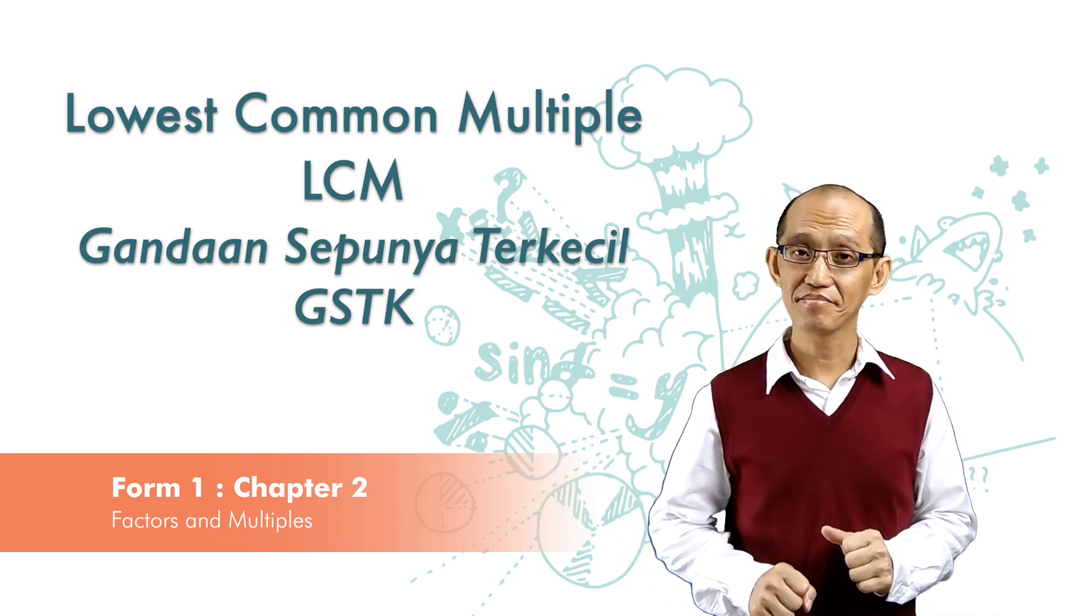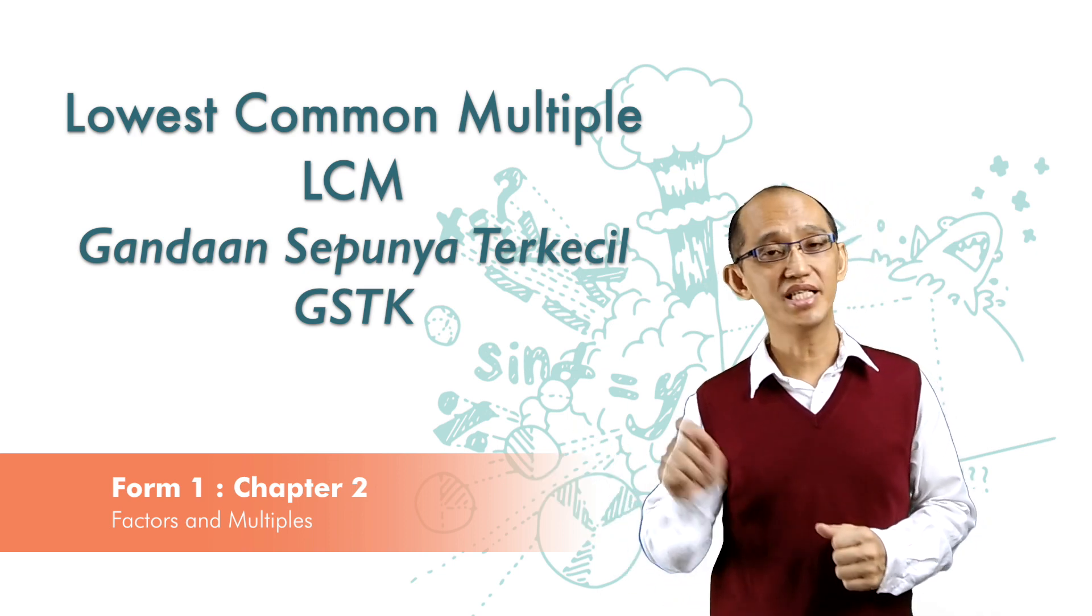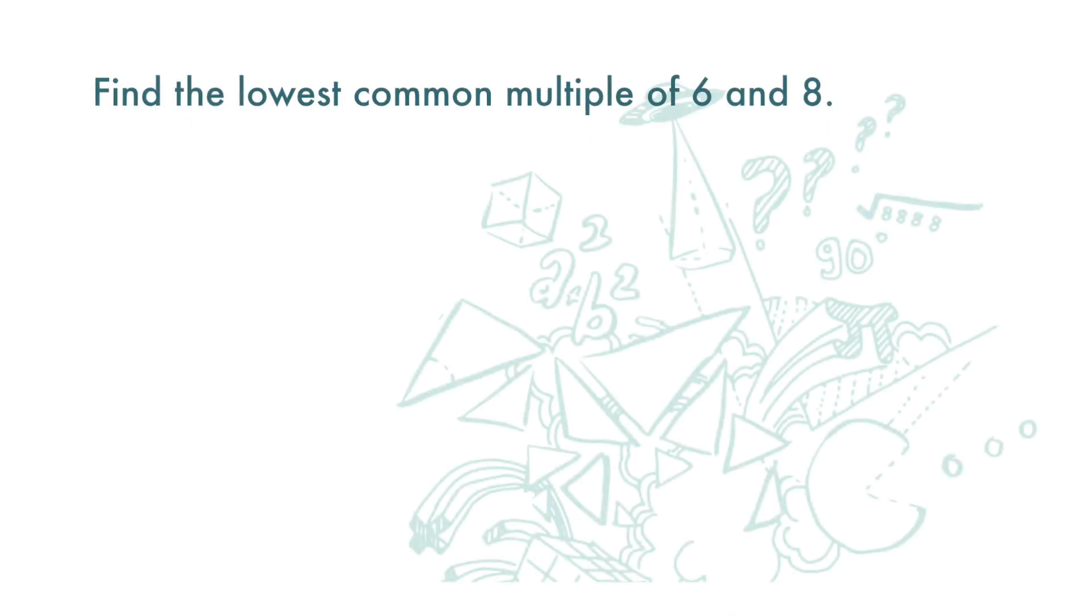Let's look at this question: find the lowest common multiple of 6 and 8. The multiples of 6 are 6, 12, 18, 24, 30, 36, and so on. The multiples of 8 are 8, 16, 24, 32, 40, and so on.